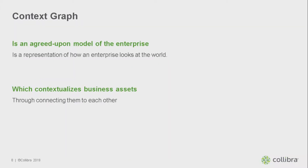Now I come to the idea of context graphs. It's just a word we put on it — you can also think of it as a knowledge graph underlying it. But the key idea is that it's an agreed-upon model of the enterprise. All these people have come together, facilitated through our system, to arrive at an agreed-upon knowledge representation of the enterprise.